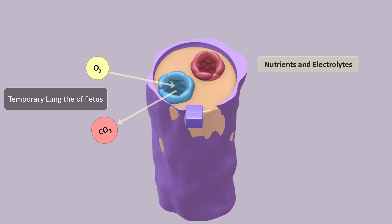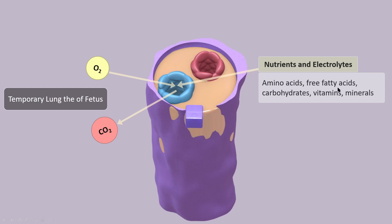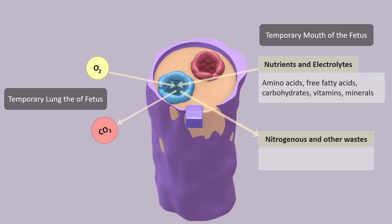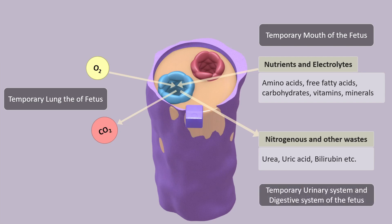Similarly, there is the exchange of nutrients and electrolytes across the placental barrier. From the maternal blood, amino acids, free fatty acids, carbohydrates, vitamins and minerals go across the placental barrier to the fetal blood. Of course, the baby cannot eat food, so here again the placenta is acting as a temporary mouth of the fetus. As the baby cannot excrete out nitrogenous and other waste material, the placenta comes to rescue. Urea, uric acid, bilirubin and other waste material are excreted out into the maternal blood through the placenta, so the placenta is acting as a temporary urinary system as well as a component of the digestive system of the fetus.